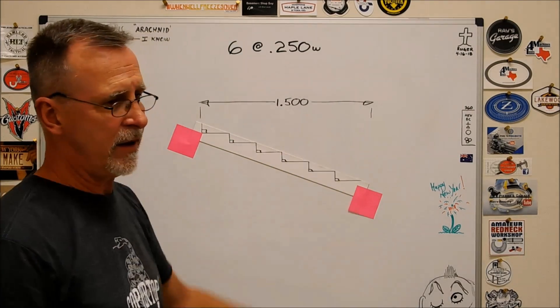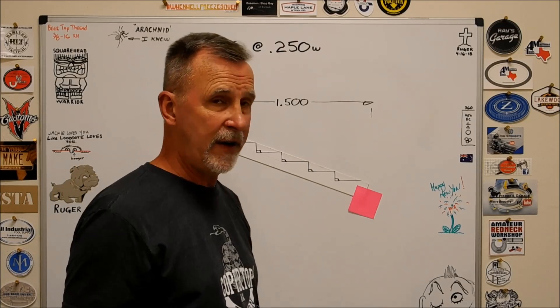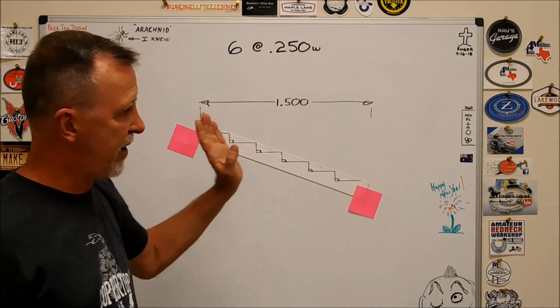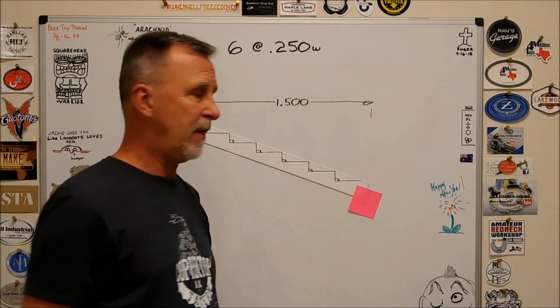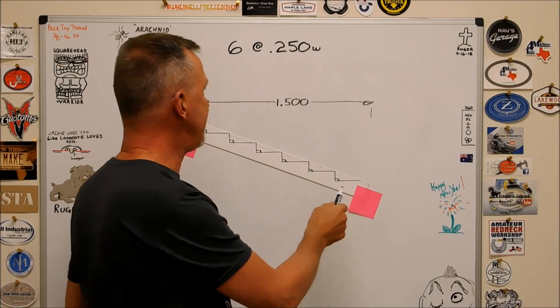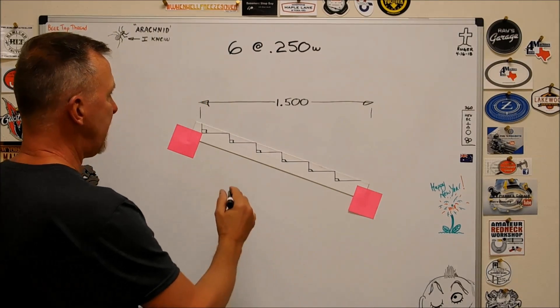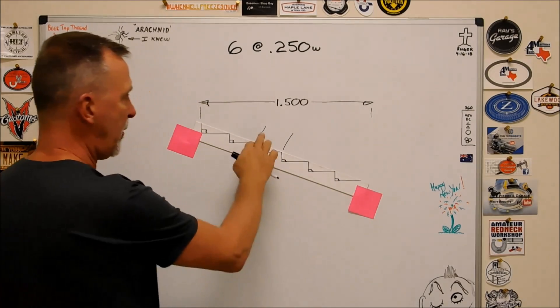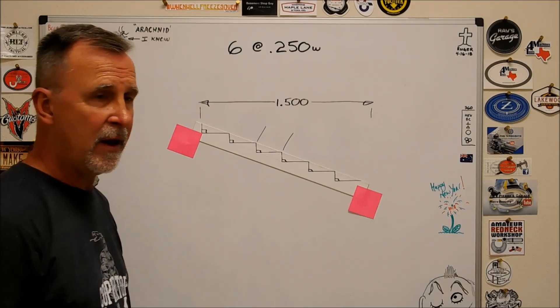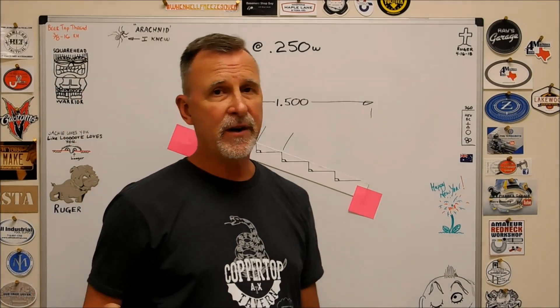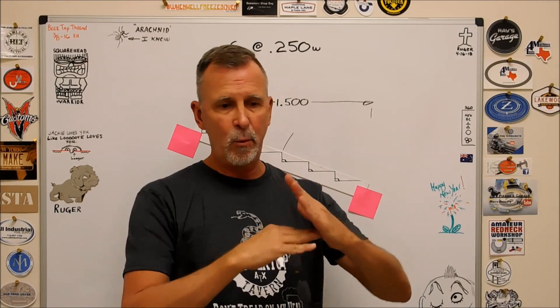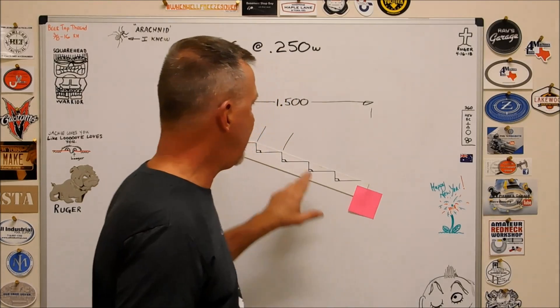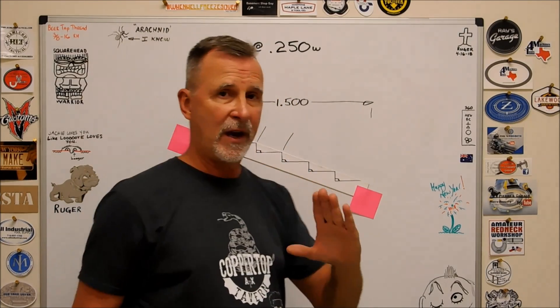I think you can see now that this is no longer an inch and a half long. The resultant feature will be an inch and a half long, but we are no longer looking at an inch and a half worth of linear movement. But the stair steps are not 250 wide anymore because our 250 dimension is right here. So now we have a triangle that we need to figure out.